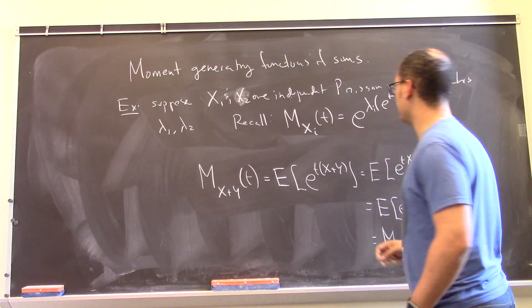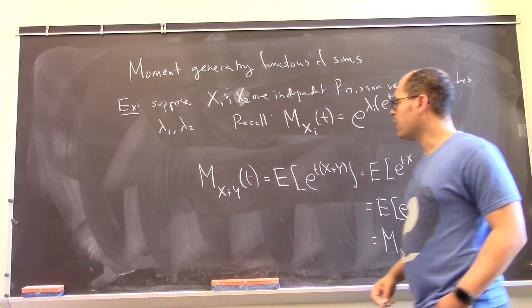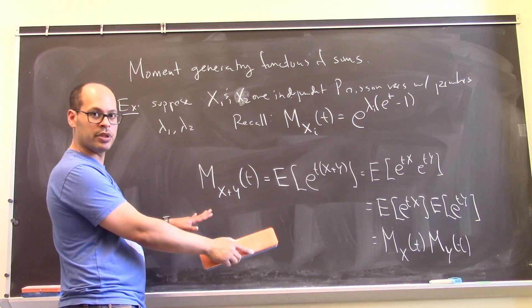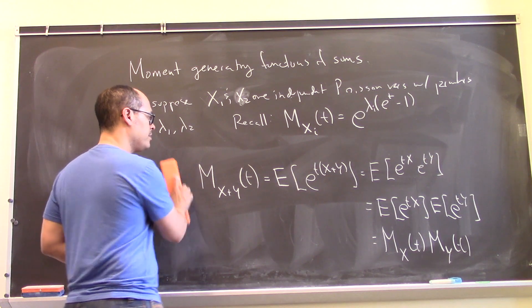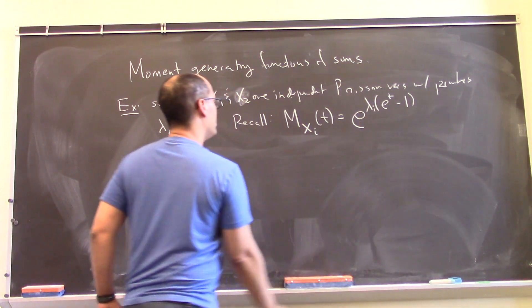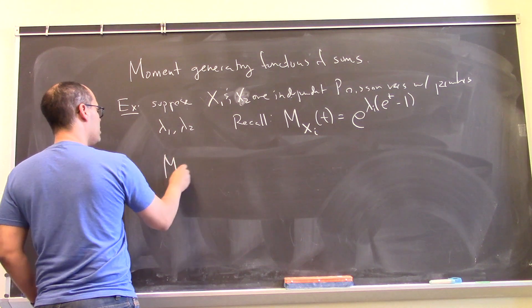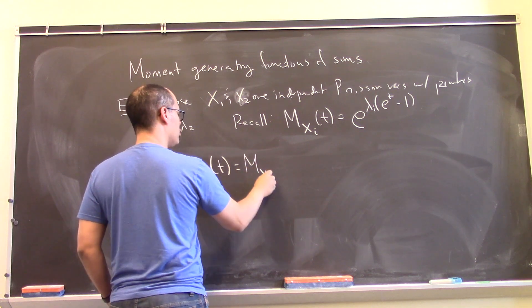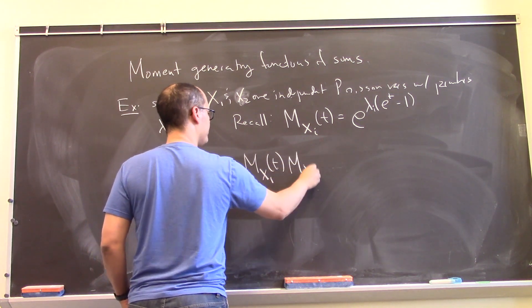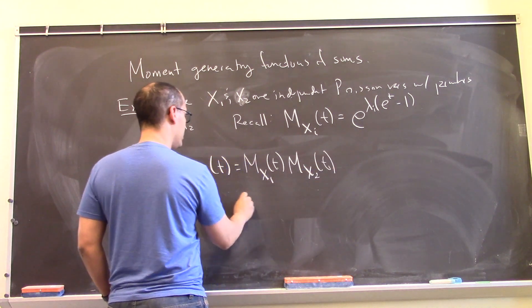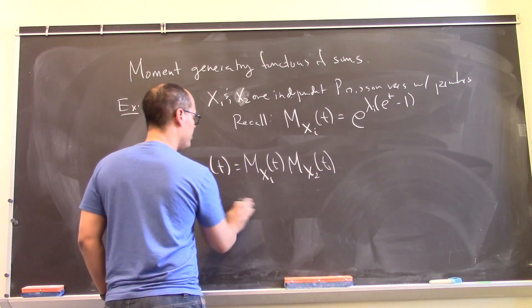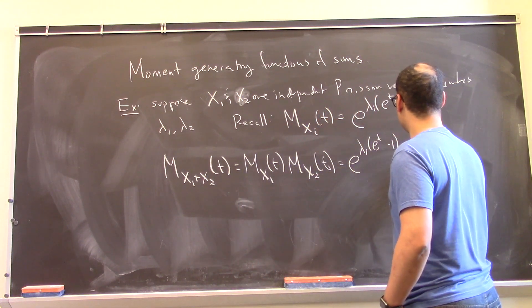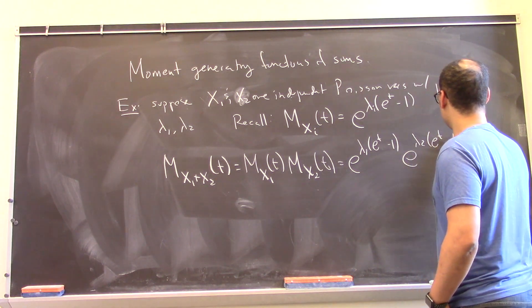Now, what this formula tells us then is we can find the moment generating function for the sum by taking the product of the two moment generating functions, and that is e to the lambda 1, e to the t minus 1, e to the lambda 2, e to the t minus 1.